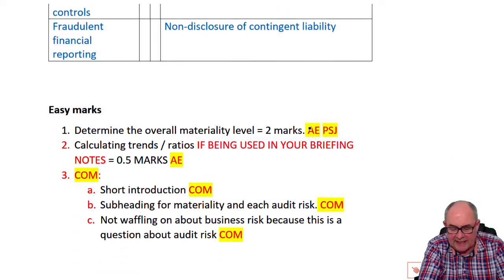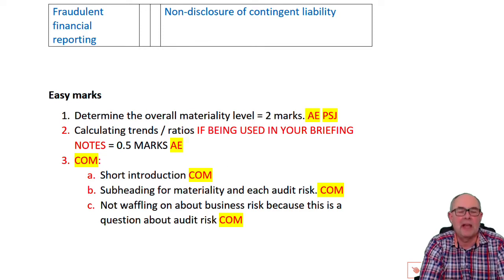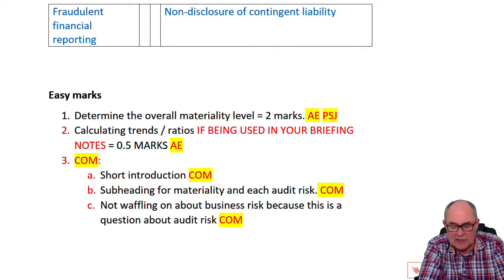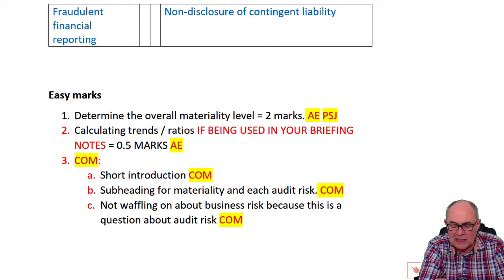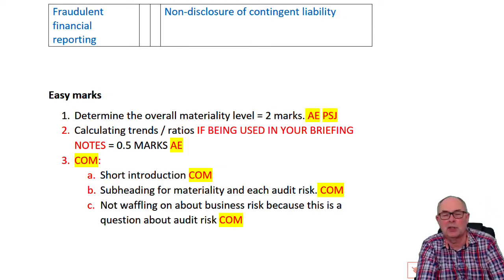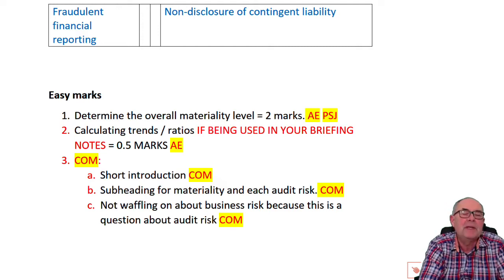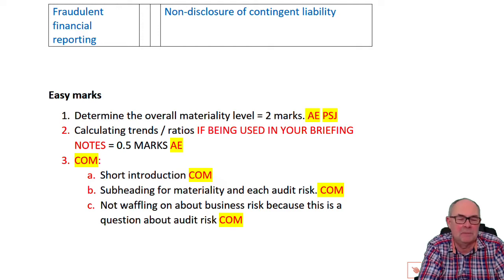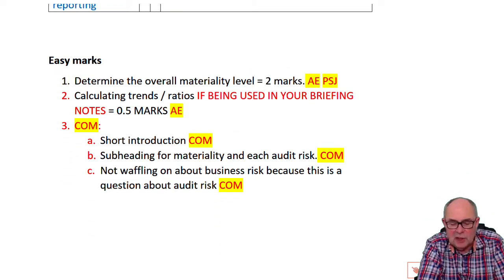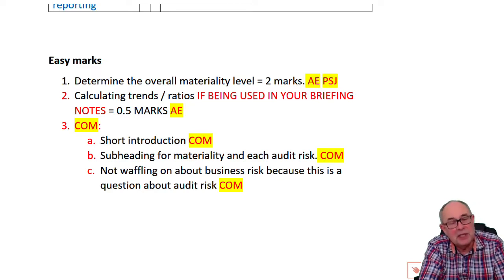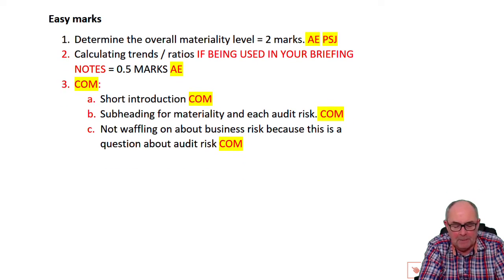In this question there are some easy marks. The requirement gives clues that they want you to determine materiality, and actually determining it will get you two marks. It will also count towards your credit for analysis and evaluation of professional skills. Take the profit, work out 5% to 10% of profit — given there are some control issues, you'd go closer to 5%. So materiality might be set at 5% of profit, which is £4 million or whatever. That's an easy way to pick up more than two marks.